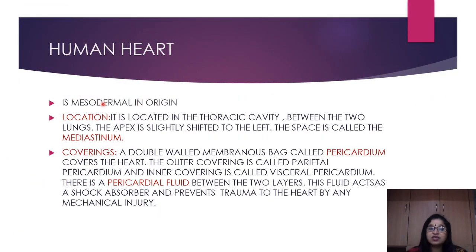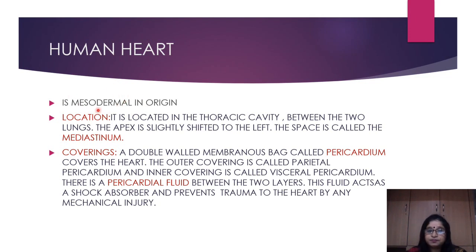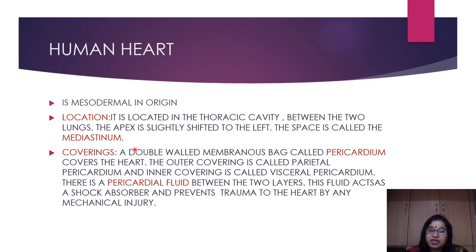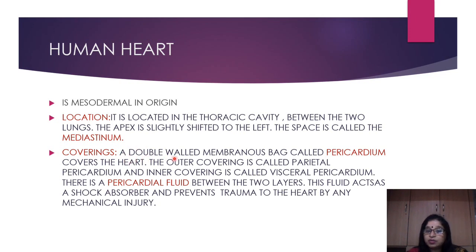The human heart is mesodermal in origin — an important question from the three germinal layers: ectoderm, mesoderm, and endoderm. The heart is located in the thoracic cavity, behind the ribs, between the two lungs, with the apex slightly tilted towards the left. The space it occupies is known as the mediastinum or mediastinal space. The heart is covered by a double-walled membranous bag called the pericardium — peri meaning around, cardium meaning heart — which protects it.